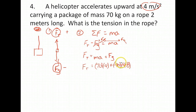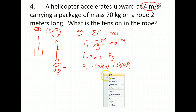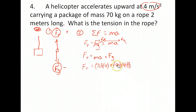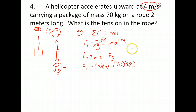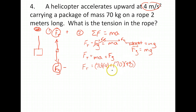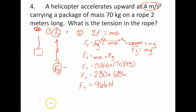Why is it 70 times 9.8? Because the force of gravity equals mass times the acceleration due to gravity — this is really weight. So the force of tension equals 70 times 4 plus 70 times 9.8, which gives us 280 plus 686, for a total tension of 966 newtons.